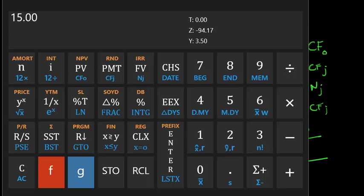Then the final cash flow, $103.50. So $103.50, this is the maturity value plus the final coupon. So it's going to be the final cash flow.